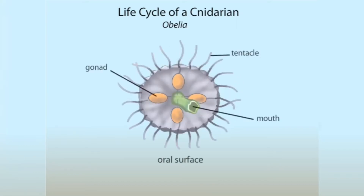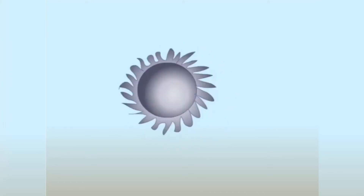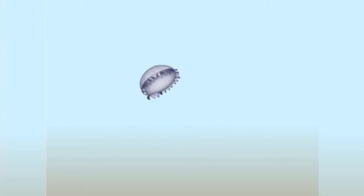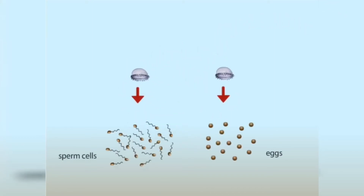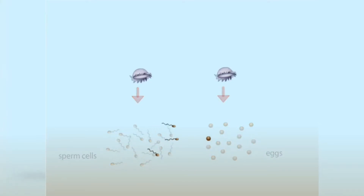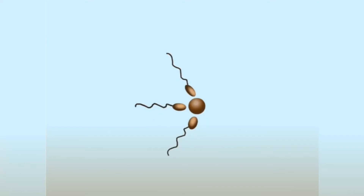A Medusa may be male or female. Male and female Medusae have gonads which produce sperm and eggs, respectively. The Medusae reproduce sexually by releasing their sex cells into the water. The sperm cells meet and fertilize the eggs, which become the single-celled zygotes of the next generation.